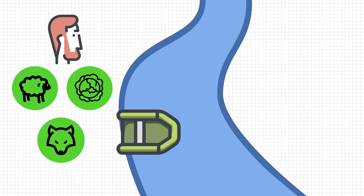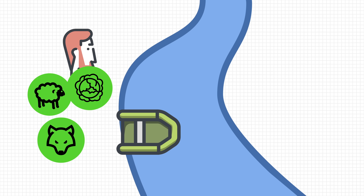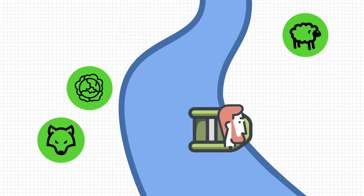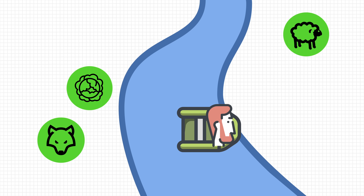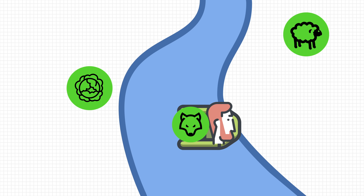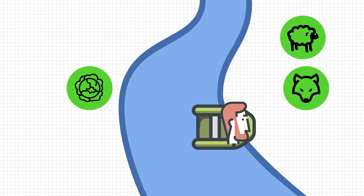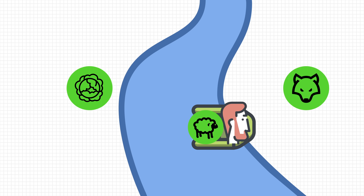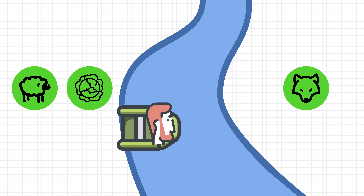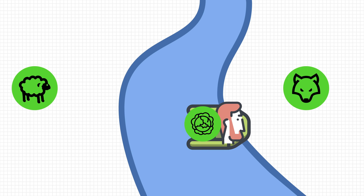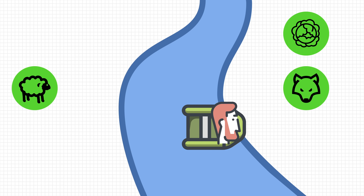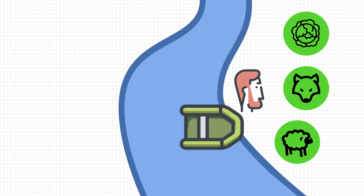It probably didn't take you too long to realize that you have to take the sheep across first, because the wolf won't eat the cabbage. Then you go back to fetch the wolf. But since you can't leave these two unattended, you take the sheep back across the river. Then you take the cabbage across because the wolf won't eat it. And finally, you go back to fetch the sheep. Tada! All of your purchases have now made it safely across the river.